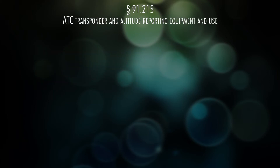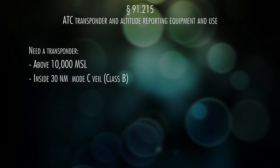91.215: Transponders. You need them in three places: anytime you're above 10,000 feet, anytime you're inside the Mode C veil around Class Bravo airspace, and in and above Class Charlie airspace.